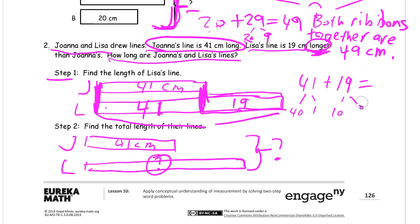Lisa's line is gonna be this right here: it's gonna be 41 plus the 19, right? So that's what we have to add together. And you might see this: 41 plus 19.